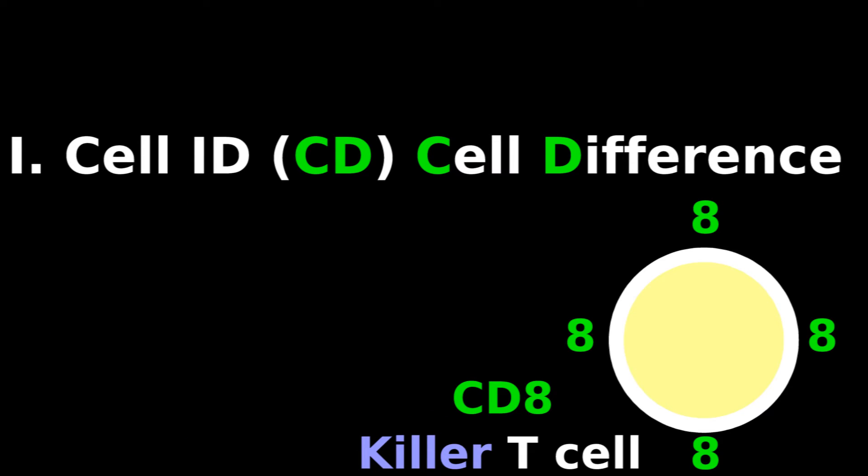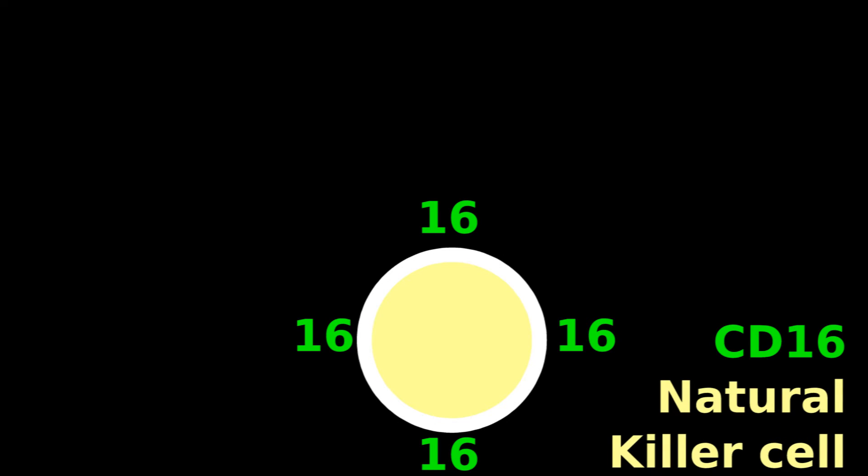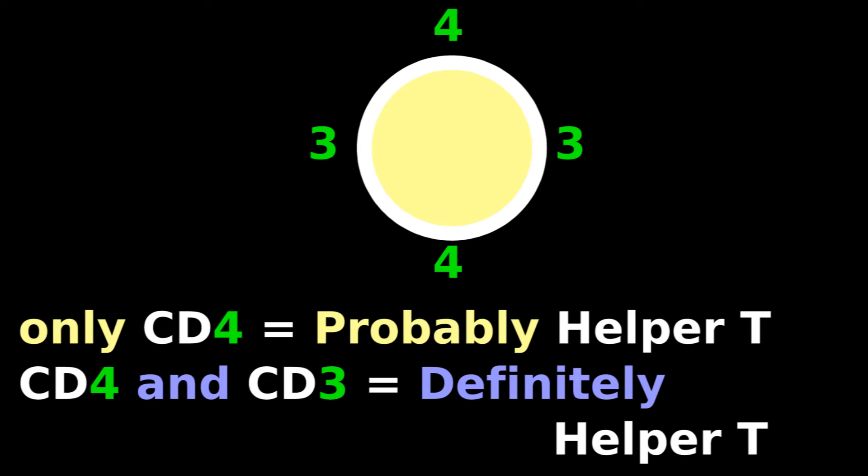With CD8, it's probably a killer T cell. Other CDs are name tags for other cell types, and combinations of CDs are also helpful for identification.